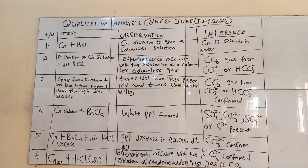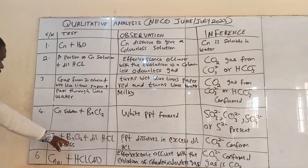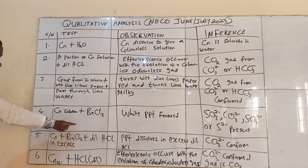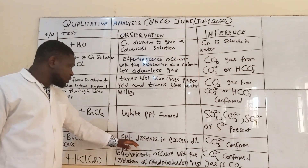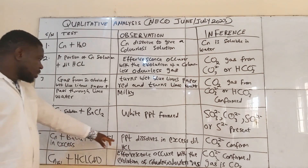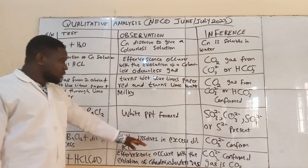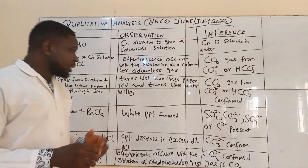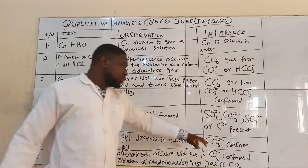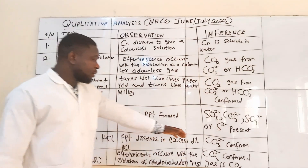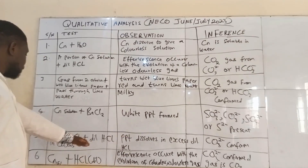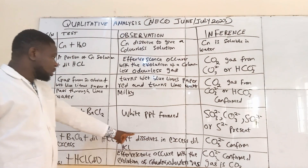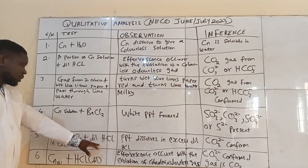To confirm which particular ion is present, bring the salt solution, add barium chloride, then add dilute HCl — first in drops, then in excess. You will notice that the precipitate which formed when you added barium chloride will dissolve. When it dissolves, it is an indication that the ion contained is CO₃²⁻, because it is only CO₃²⁻ that will dissolve in excess dilute HCl.